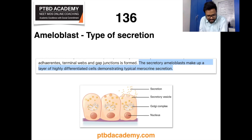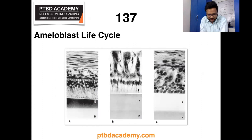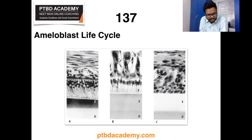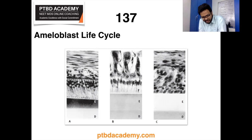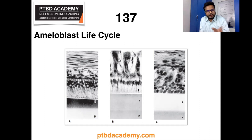Moving on to the ameloblast life cycle. The ameloblast life cycle is divided into six stages: the morphogenetic stage (prior to differentiation), the organizing stage (in which the cell differentiates into ameloblasts), the formative stage (in which enamel formation occurs), the maturative stage (complete mineralization), the protective stage (in which ameloblasts become part of the condensed enamel organ, reduced to reduced enamel epithelium to protect the newly formed crown), and finally the desmolytic stage (in which reduced enamel epithelium creates a pathway for eruption of teeth).